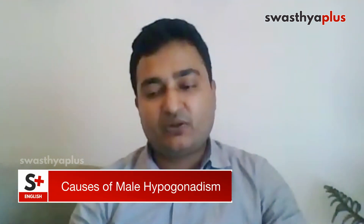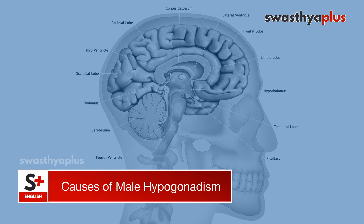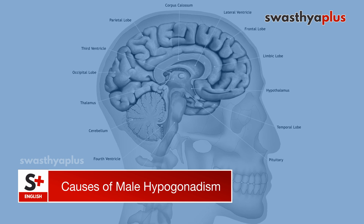Hypogonadism can be due to a congenital cause — a cause present at birth — which is formally diagnosed when patients present in the reproductive or adolescent age group. This can be due to deficient maturation of the hypothalamic-pituitary axis or deficiency in the hormones normally produced from the hypothalamic-pituitary axis.